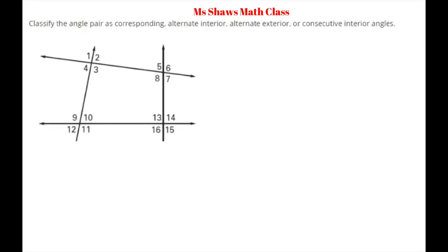Hi everyone. We're going to classify angle pairs as corresponding, alternate interior, alternate exterior, or consecutive interior angles. I'm going to go over some definitions — there are four types. We're also going to talk about supplementary angles, and there's a proof. We're also going to solve for x and y. Let's get started.